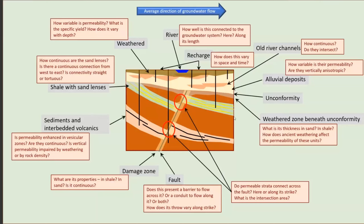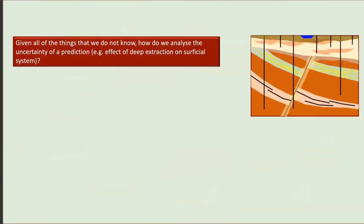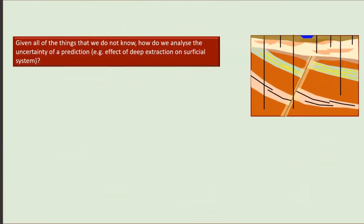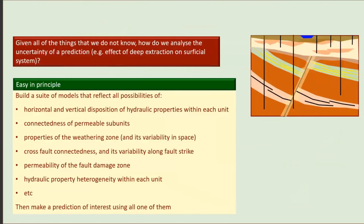There are the hydraulic properties at every place, which can vary wildly, and there's the connectedness of hydraulic properties, which can also vary wildly. In principle, the solution isn't too hard. We recognize that we have a geological conceptual model with a lot of detail — but the details of the detail are unknown. Our job as modellers is to come up with different possibilities for that detail, build a model, run the model, make predictions, and build up the uncertainty distribution of a prediction.